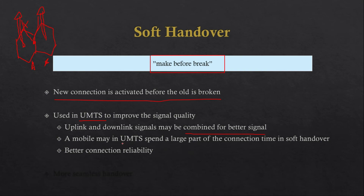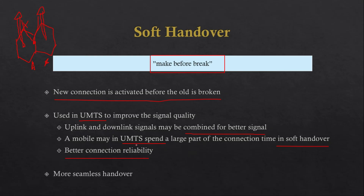In UMTS, a mobile may spend a large part of its connection time in soft handover. It provides better connectivity and reliability, which is why it is popular in CDMA. It is a more seamless handover because the user does not feel any break in connection while moving from one cell to another.